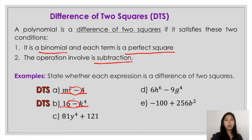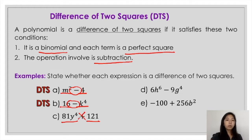For the third example, it consists of two terms, so that's a binomial. Looking at the two terms separately, 81y raised to 4 is a perfect square, and 121 is also a perfect square. So the first condition is satisfied. But the second condition says the operation must be subtraction — which in this case, the operation involved is addition. So automatically, this third example is not a difference of two squares.